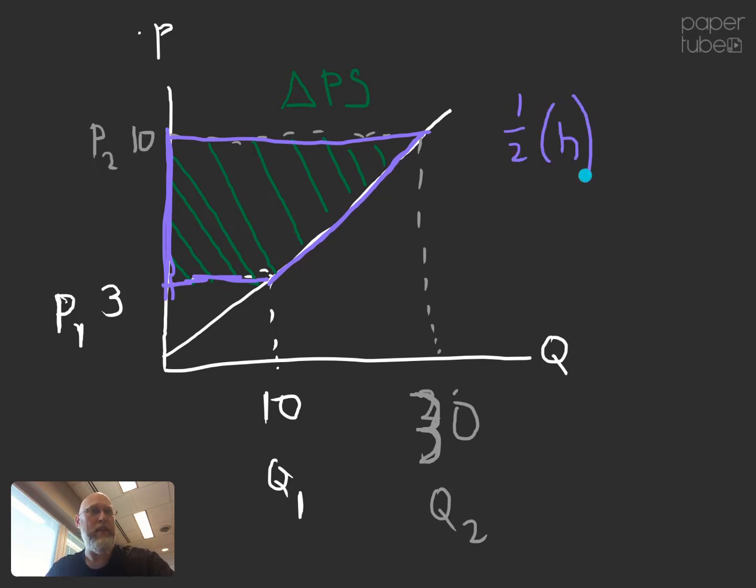And the formula for the area of a trapezoid is one half of the height. And the height is this distance here, which is the difference between the two prices. Multiplied by the length of the top plus the length of the bottom of our trapezoid. Where this distance here is the top of the trapezoid, which is just Q2 in this case. And this distance here is the bottom of the trapezoid, which is just Q1 in this case.